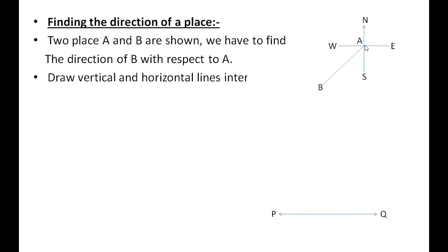Draw a vertical and horizontal line intersecting at point A. Join A and B. What do we observe? We observe that B is to the southwest of A.